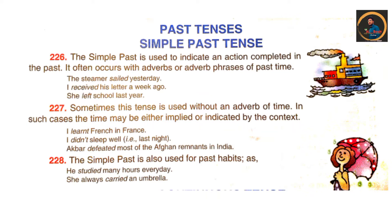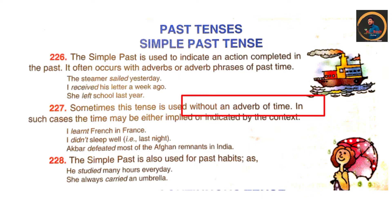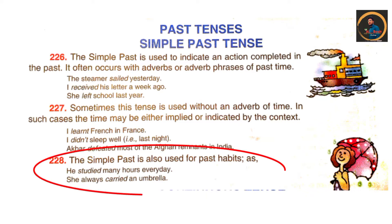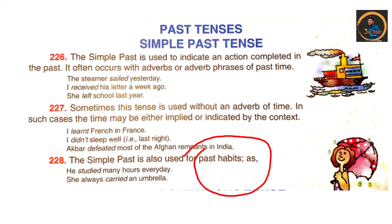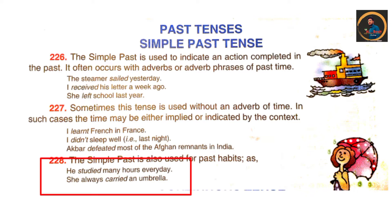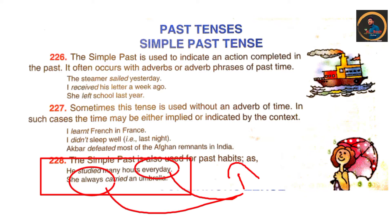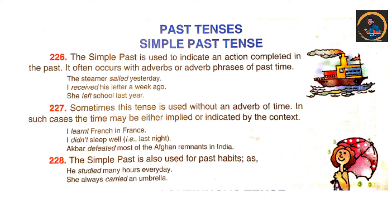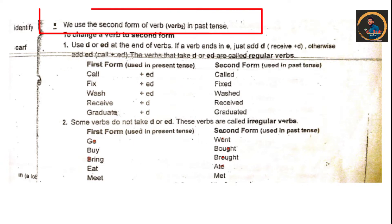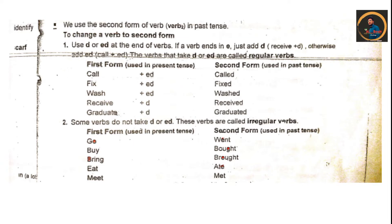For example: 'I learned,' 'I didn't sleep well,' 'Akbar defeated most kingdoms in India.' Simple past is also used for past habits and for stories. For example: 'He studied many hours every day' — this is a past habit. 'She always carried an umbrella.' We use the second form of the verb in past tense.